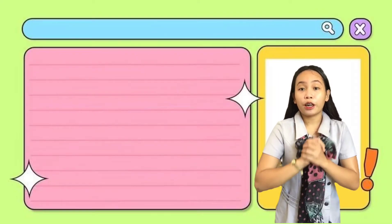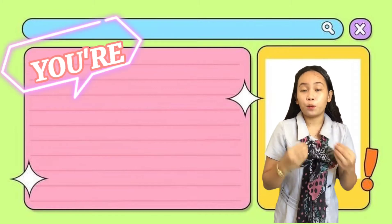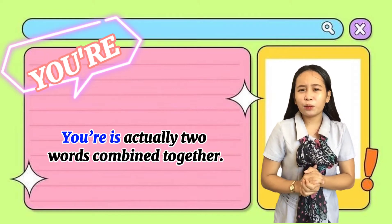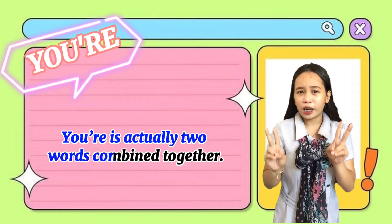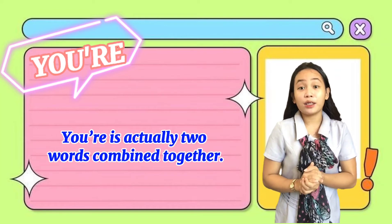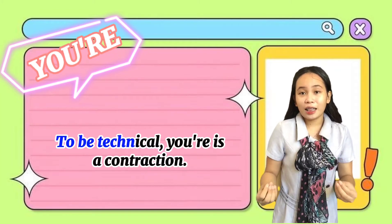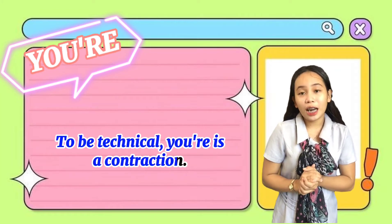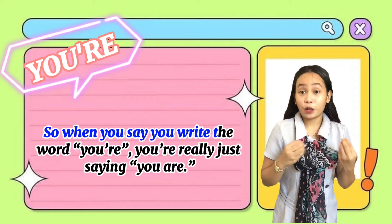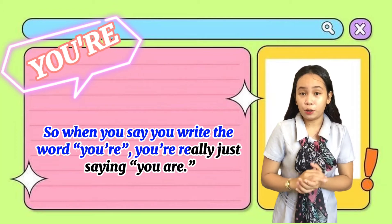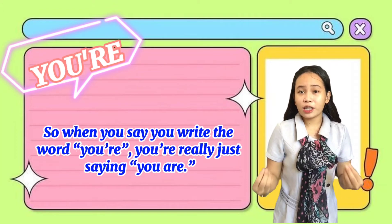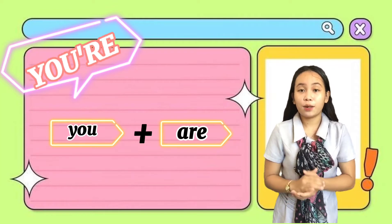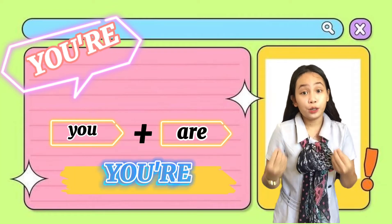Now let's look at 'you're,' spelled Y-O-U-apostrophe-R-E. It is actually two words combined together. To be technical, 'you're' is a contraction. So when you say or write the word 'you're,' you're really just saying 'you are.' You plus are equals 'you're.'